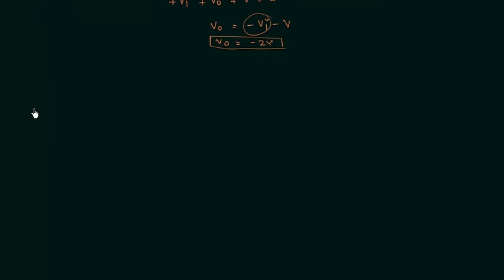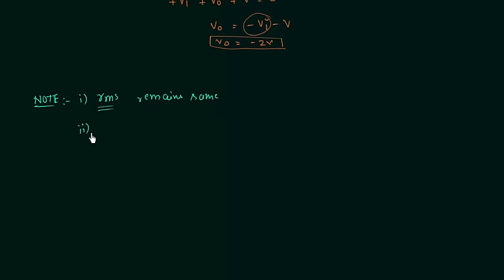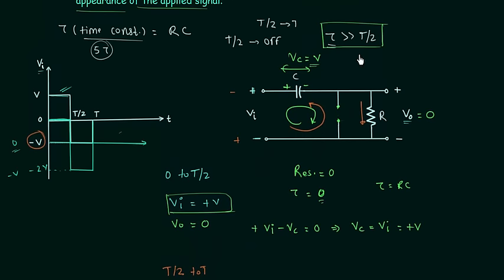There are a few important points to note. First, the RMS value remains the same — the clamped signal has the same RMS value as the input signal. Second, the peak value changes in the clamped signal. Third, the time constant tau must be greater than T/2. If you have any doubts, ask in the comment section.